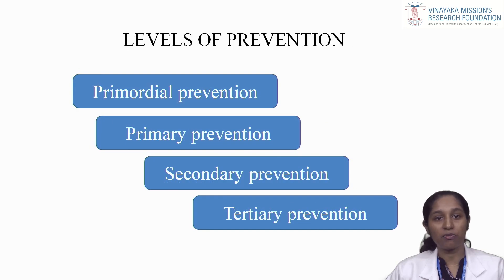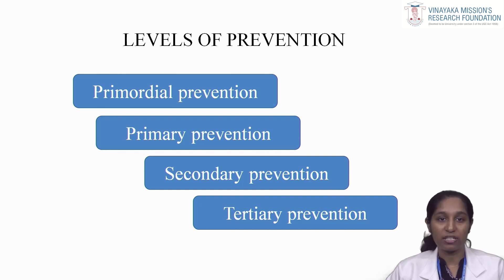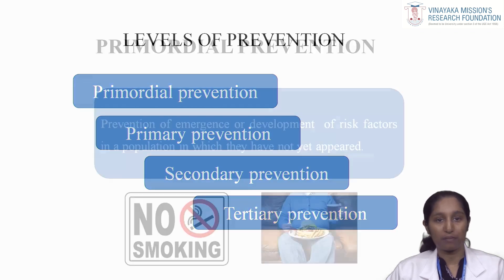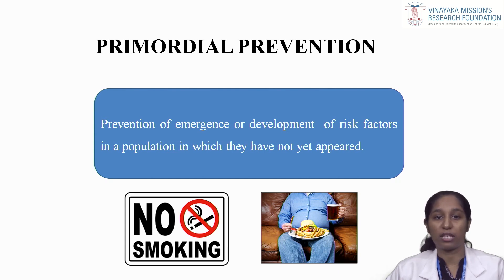In modern day, the concept of prevention has become broad based and can be studied under basically four levels: namely primordial prevention, primary prevention, secondary prevention and tertiary prevention. First, let us see what is primordial prevention. It is the prevention of emergence or development of risk factors in a population in which they have not yet actually appeared.